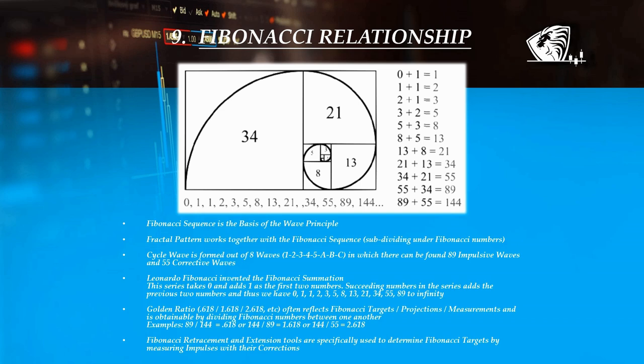Leonardo Fibonacci is the inventor of the Fibonacci summation. This series takes zero and adds one as the first two numbers. Succeeding numbers in the series add the previous two numbers, and thus we have: 0, 1, 1, 2, 3, 5, 8, 13, 21, 34, 55, 89, to infinity.